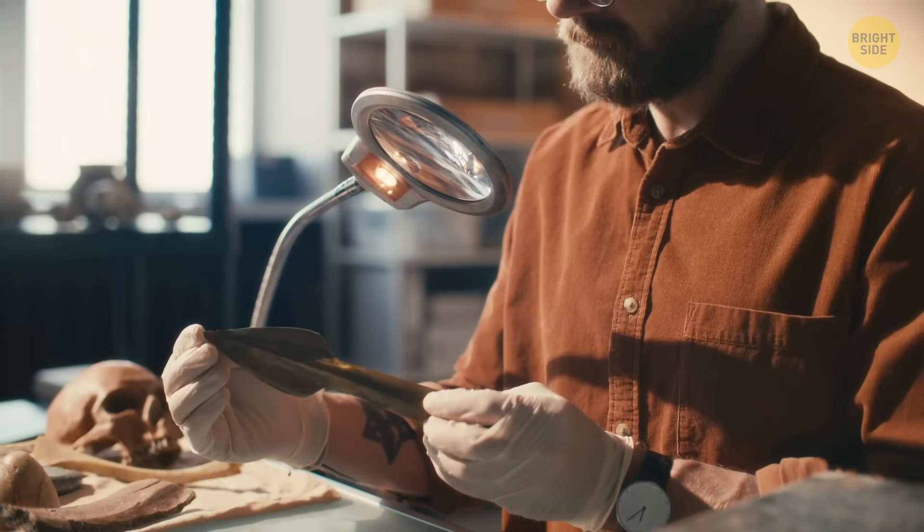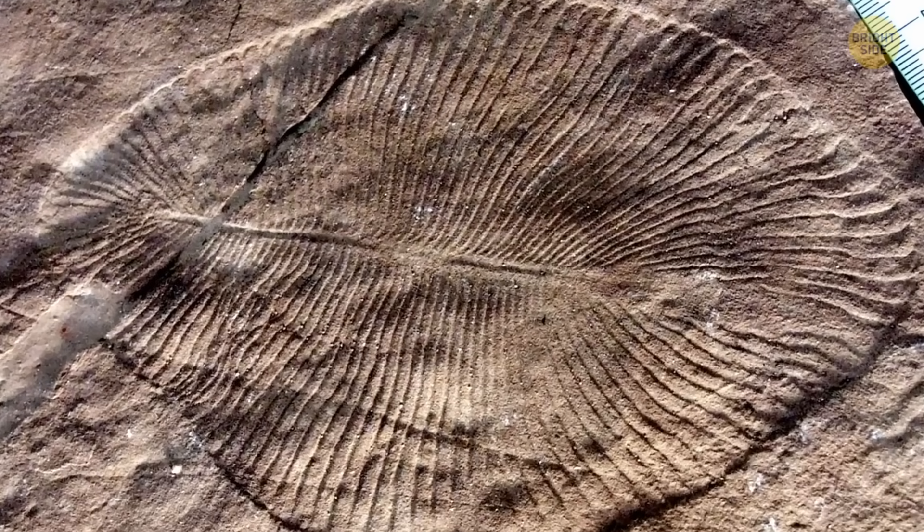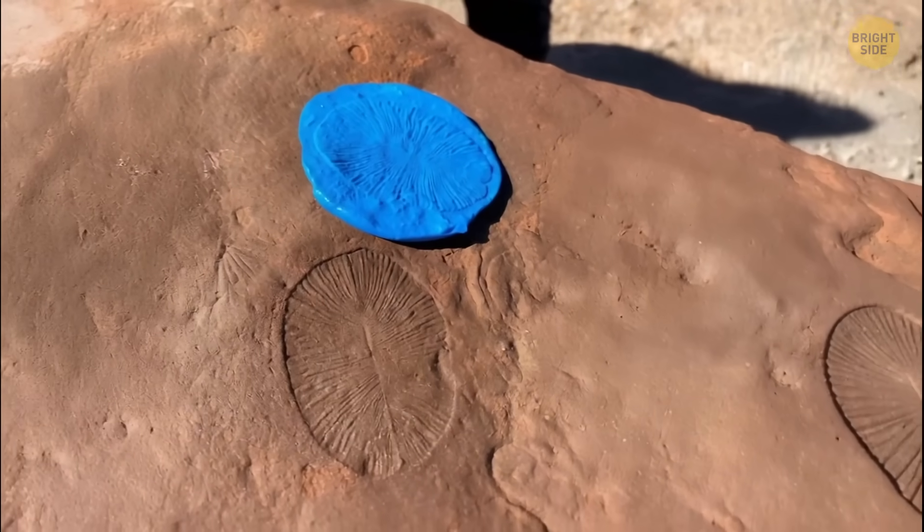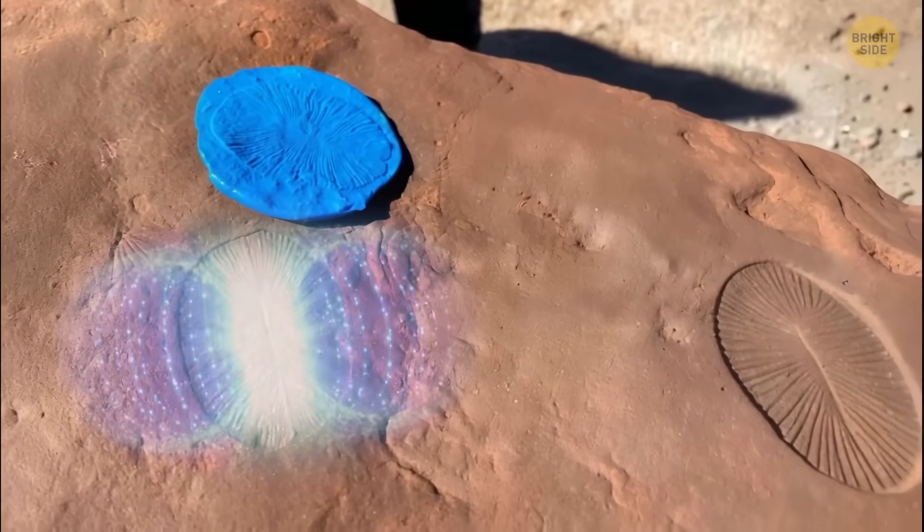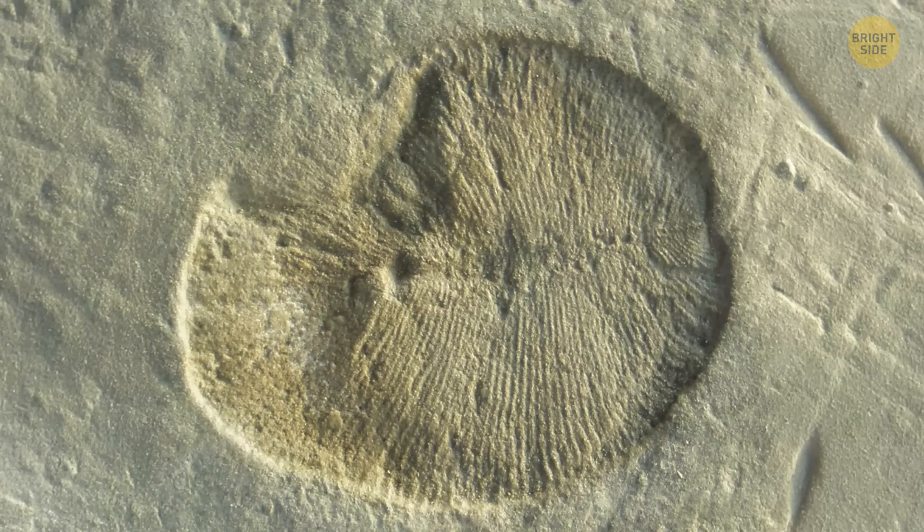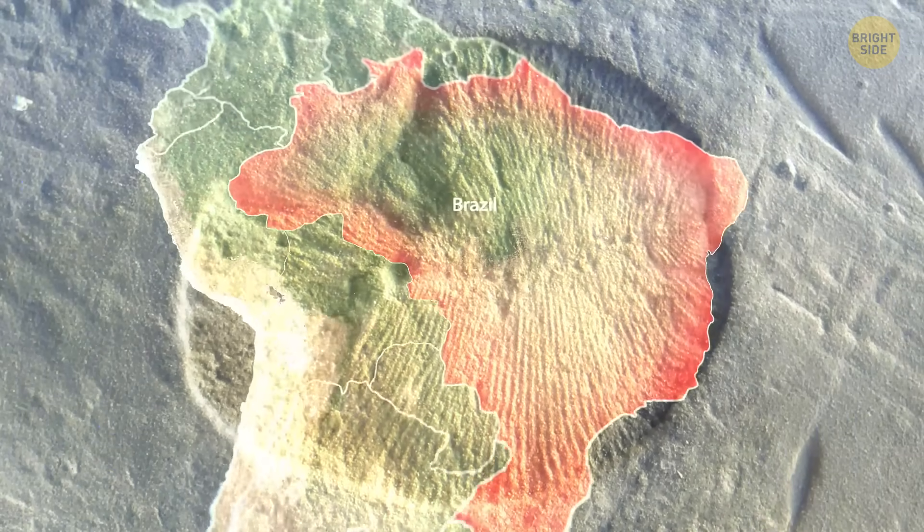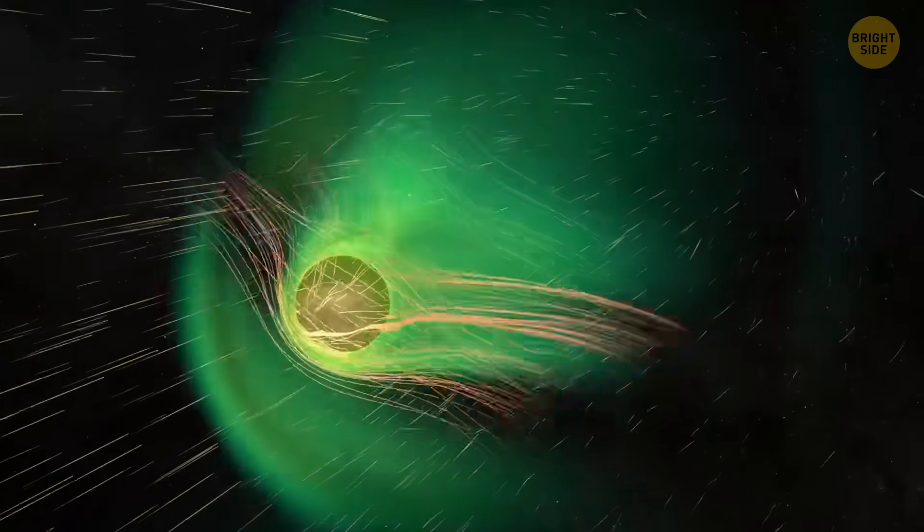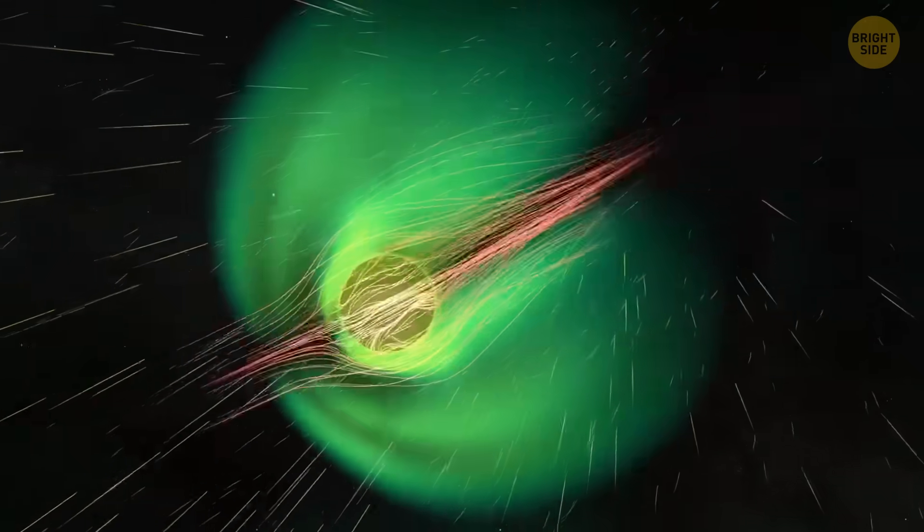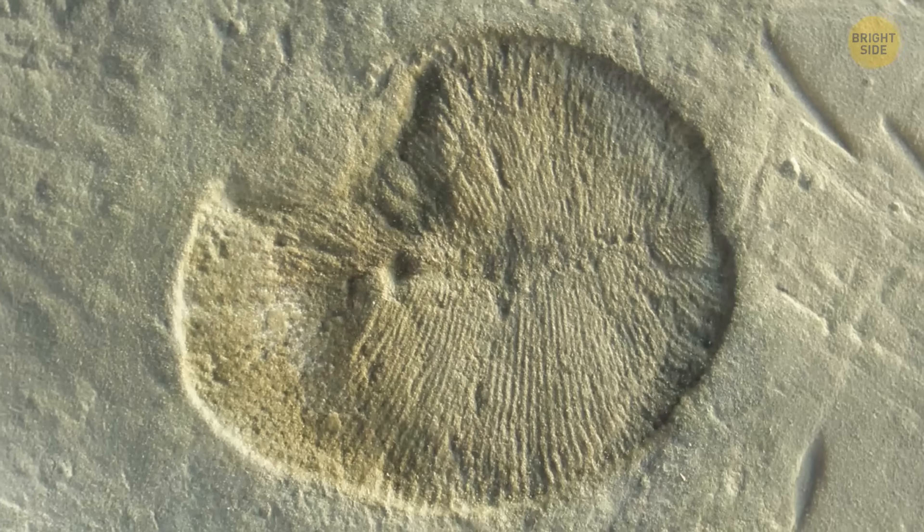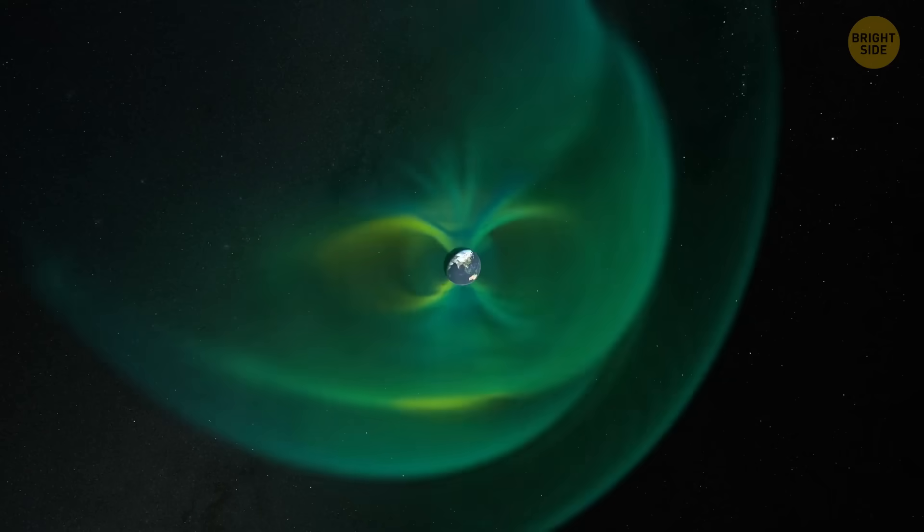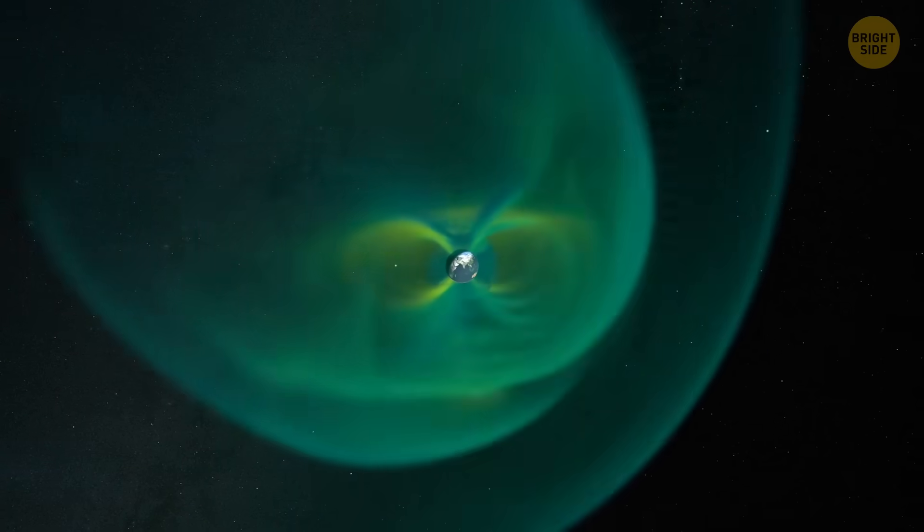Now, how do we know all this? Thanks to rocks. They're like time capsules. Tiny crystals inside them preserve the power of the magnetic field from hundreds of thousands of years ago. For example, certain crystals from southern Brazil revealed that 591 million years ago, Earth's magnetic field was 30 times weaker than it is now. And rocks from South Africa dating back 2 billion years showed that the field was at full strength back then.